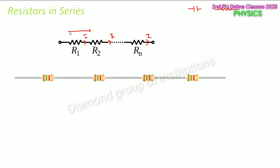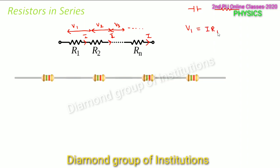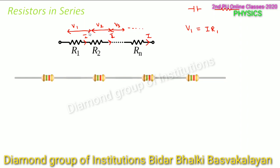However, the potential difference across each resistor is different. If the potential difference across them is V1, V2, V3, and so on — then from Ohm's law: V1 equals I·R1, V2 equals I·R2, and V3 equals I·R3, and so on, where I is the current flowing through all resistors.